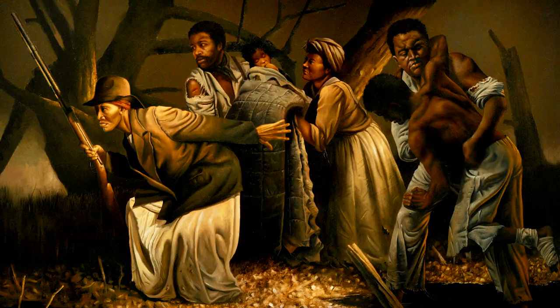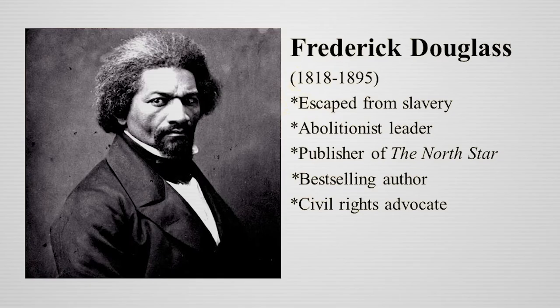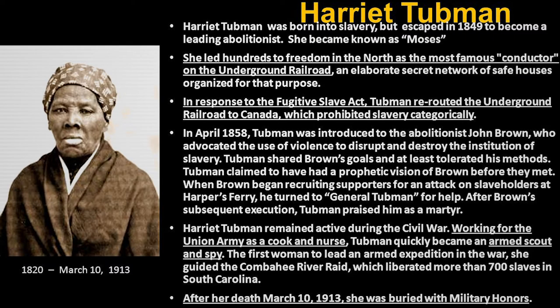From 1831 to 1861, approximately 75,000 slaves escape to the north using the Underground Railroad. In 1846, ex-slave Frederick Douglass publishes the anti-slavery North Star newspaper. In 1849, Harriet Tubman escapes from slavery and becomes an instrumental leader of the Underground Railroad.